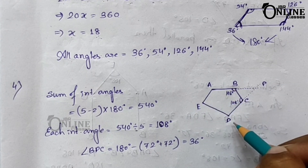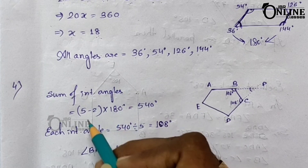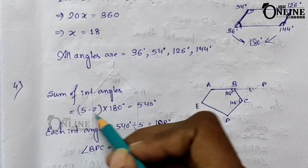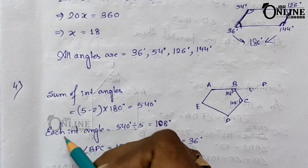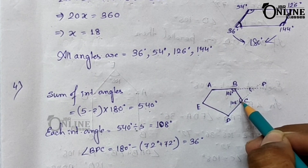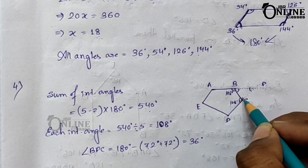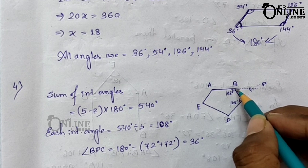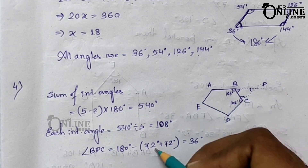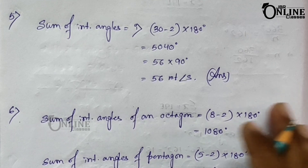Problem number four: ABCDE is a regular pentagon. AB and DC are produced to meet at point P. Find angle BPC. The sum of interior angles formula is (n − 2) × 180°. For a pentagon, n = 5, so (5 − 2) × 180° = 540°. Each interior angle = 540° ÷ 5 = 108°. The exterior angles at B and C are each 72°. In triangle BPC, angle BPC = 180° − (72° + 72°) = 36°.